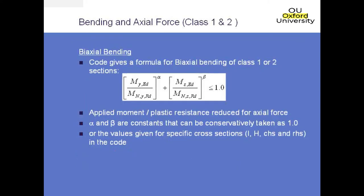In a lot of practical cases, the steel section will be subject to axial force as well as bending about both axes — so you will have biaxial bending as well as the axial load. Calculation of the collapse load is also complicated by the addition of moments about both axes. For this calculation, we can use the same principles as we've been through, where we just reduce the moment resistance by removing components to resist both the axial load and the biaxial moment. There is a formula provided in the code that takes the applied moments in each direction and divides by the plastic resistance in that direction.